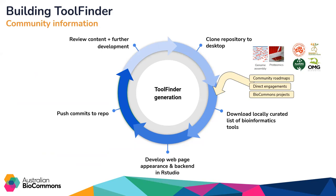There are two important aspects to note here. The first is that we draw on community information — the locally curated list of bioinformatics tools. The tools included are drawn from things like the BioCommons community of practice roadmaps, direct engagements with our researchers, and BioCommons projects drawing on that entire community ecosystem. This is a very important point: we're trying to provide something of relevance to the Australian context. Tool Finder has just over 460 tools, while bio.tools lists over 22,000 — the key is representing those tools important to Australian researchers, which are in many cases also available on Australian infrastructures.